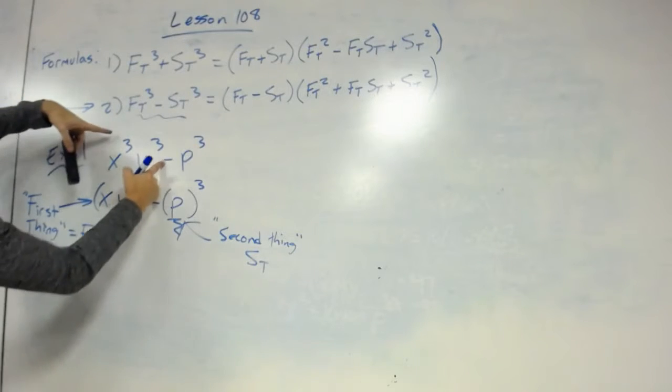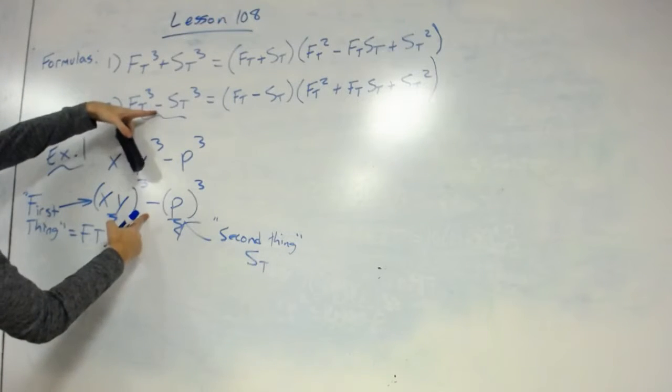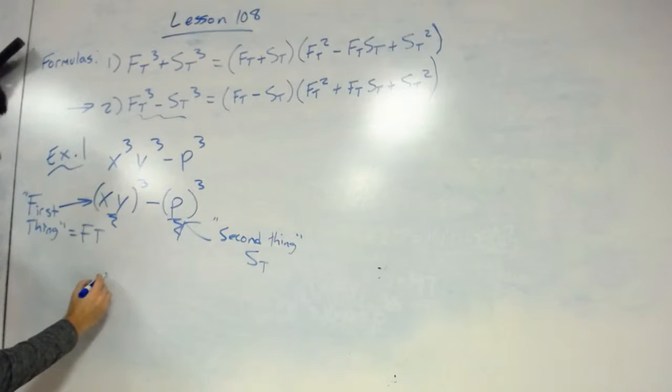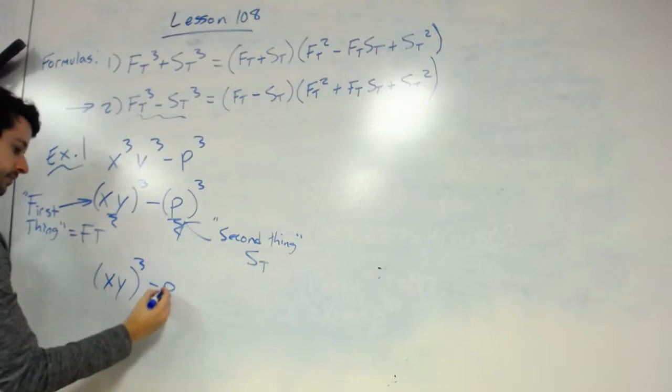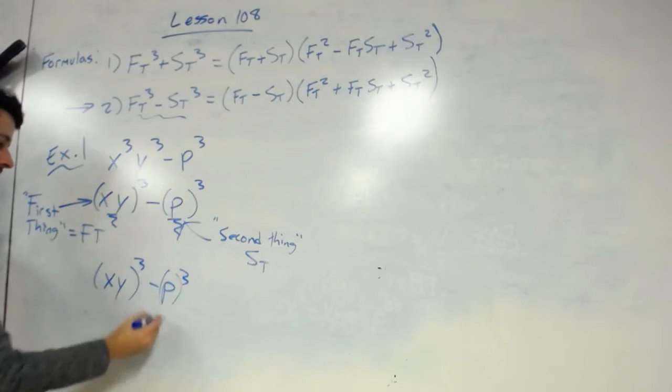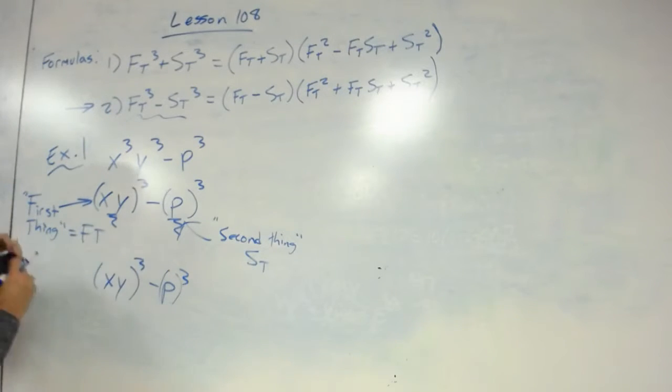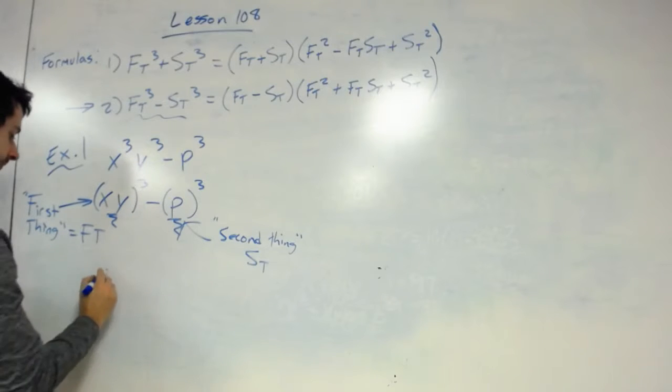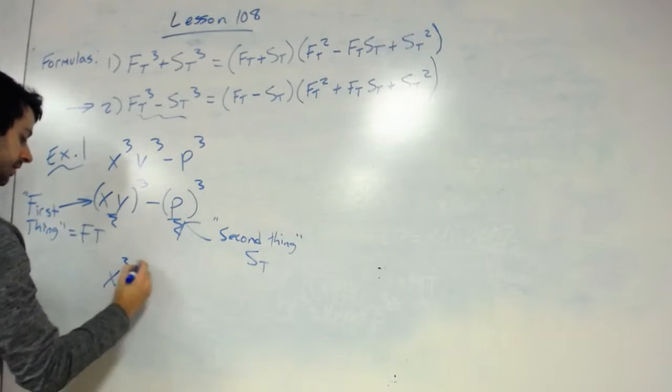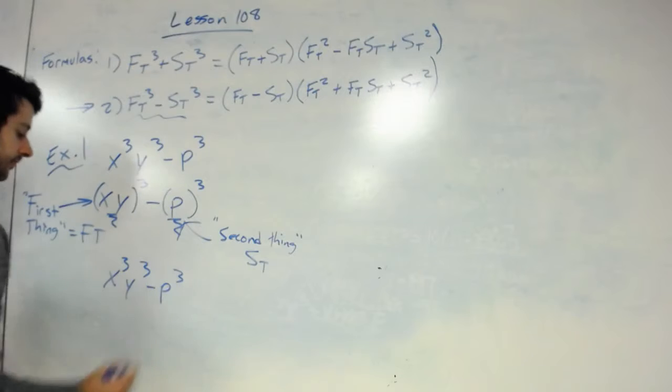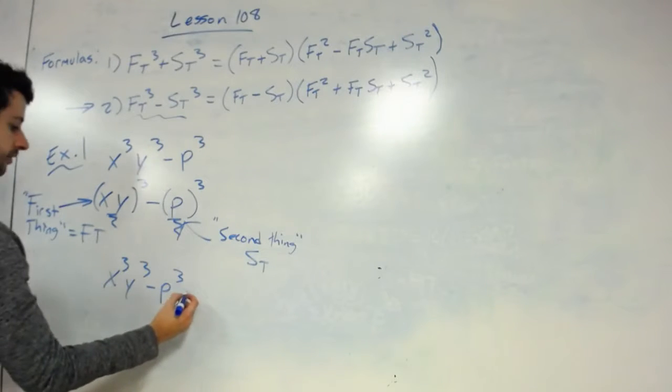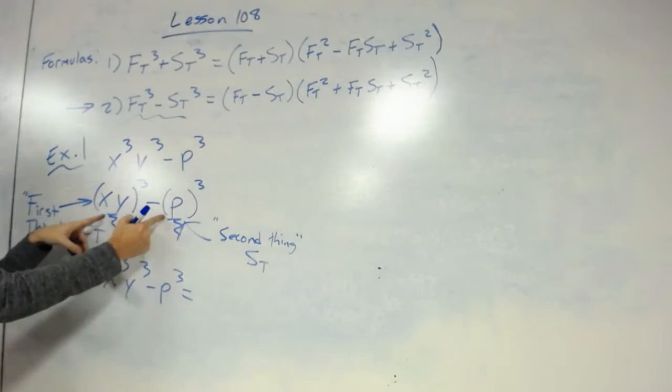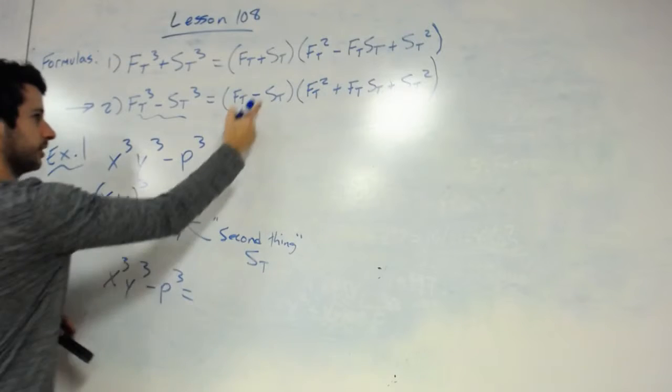This one's a subtraction problem, so we're using formula 2. I can write this as xy cubed minus p cubed, or I can write it as the original form, x cubed, y cubed minus p cubed. The reason I would do it the other way is because I want to break it down. I want to factor it out to where I know what the first thing is for Ft, and I know what the second thing is for St.